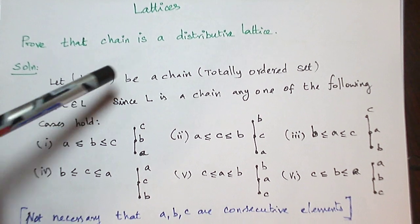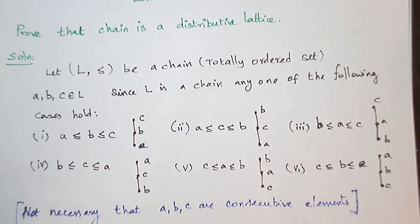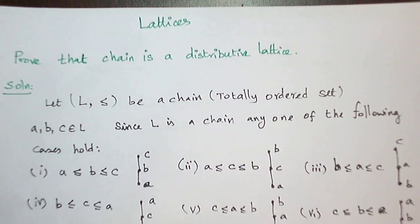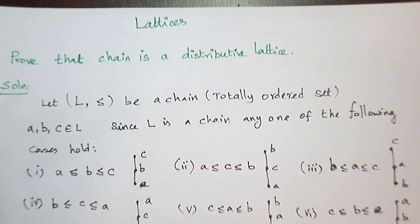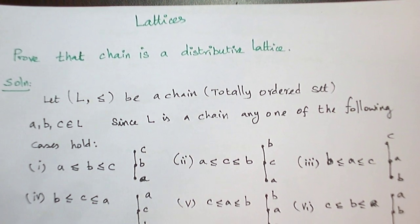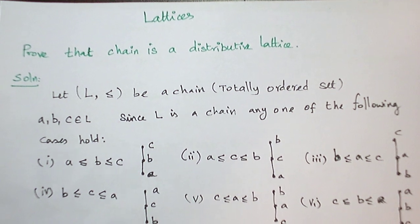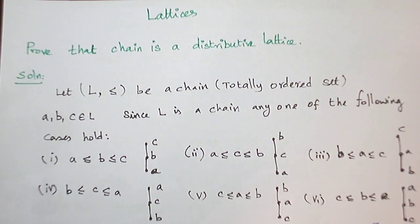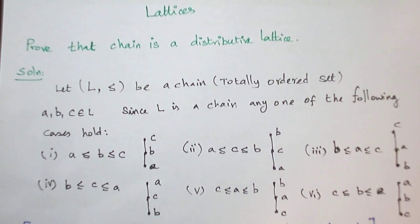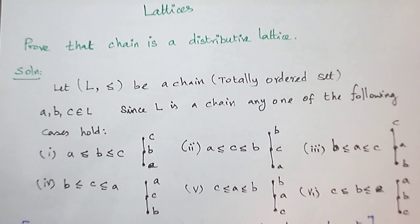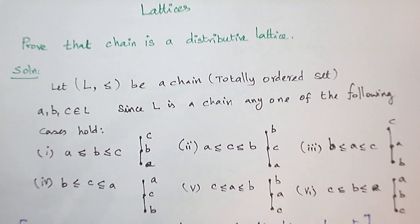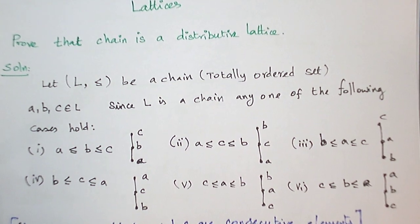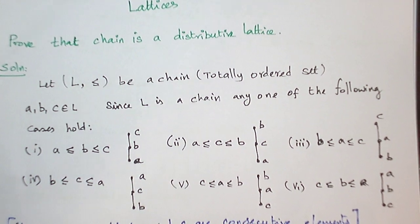So first of all let me take a chain. What is a chain? If we take any two elements they are comparable — A and B — either A is related to B or B is related to A. So A ≤ B or B ≤ A. If we draw the Hasse diagram, at each level there will be only one element, so it looks like a chain.